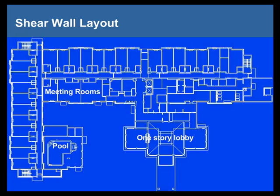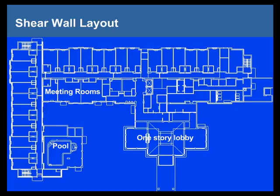This building was actually taken from a real project — a Hilton Garden Inn. You may recognize the little one-story lobby out front, which is characteristic of these types of structures. Down on the first floor they have meeting rooms, swimming pools, offices, and so forth. So a lot of the areas on the first floor are not necessarily going to line up with where the walls are above for the rooms.